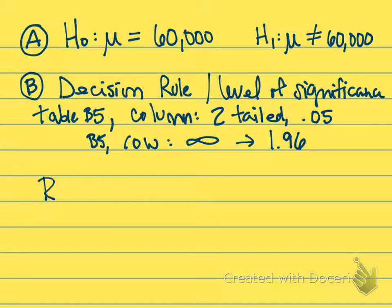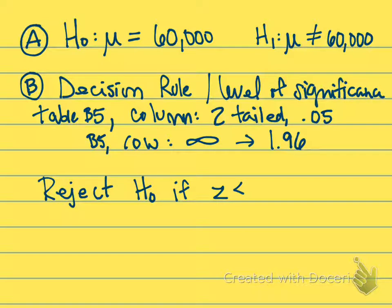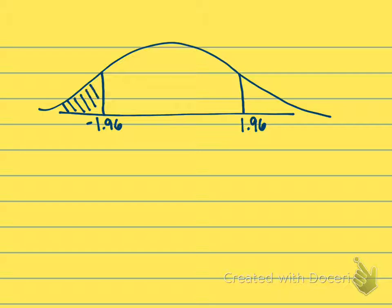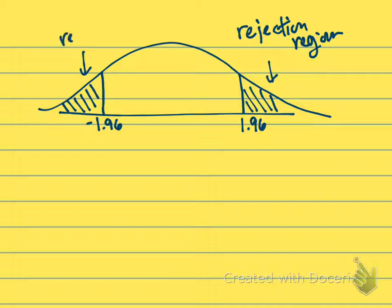Our decision rule is that we're going to reject the null hypothesis if our Z is either less than negative 1.96 or if our Z is greater than 1.96. Let me draw this out so you can see our normal distribution. This is a two-tailed test, so we'll have an upper and a lower rejection region at 1.96 and negative 1.96. The shaded regions in the tails are called the rejection region.